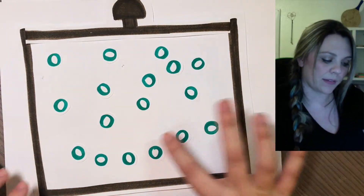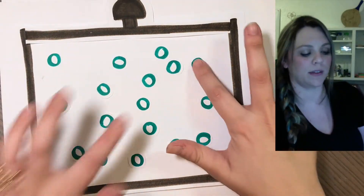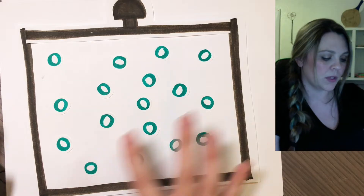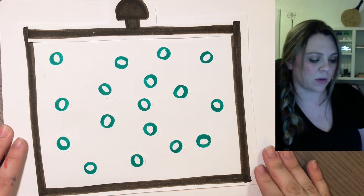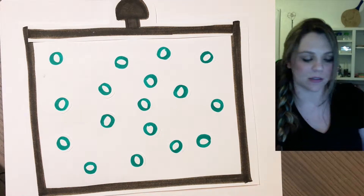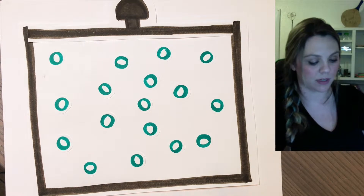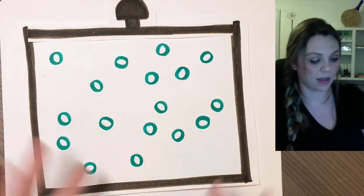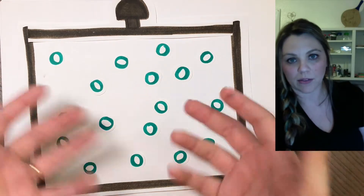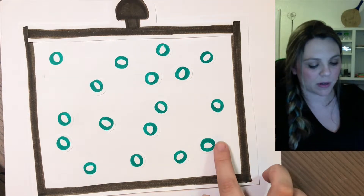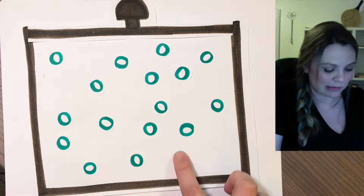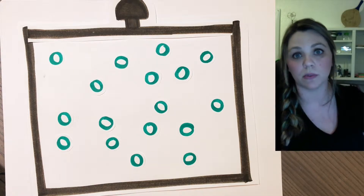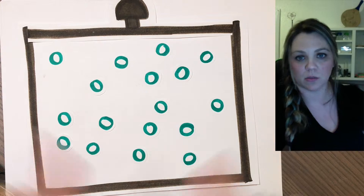It's always a closed container — you cannot have a gas in an open container because the gas will escape and you're not measuring anything. So you have a closed container with a lid and the four variables that affect your gas: temperature (how fast the particles are moving), volume (the space it takes up), amount (you can add or remove gas), and pressure (how much the particles are bouncing on the walls of the container).